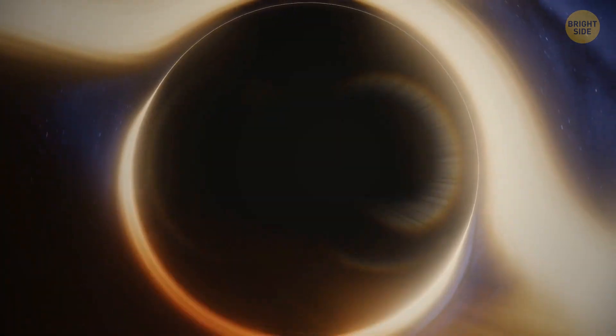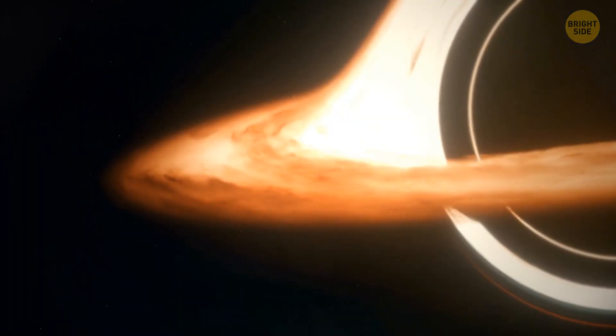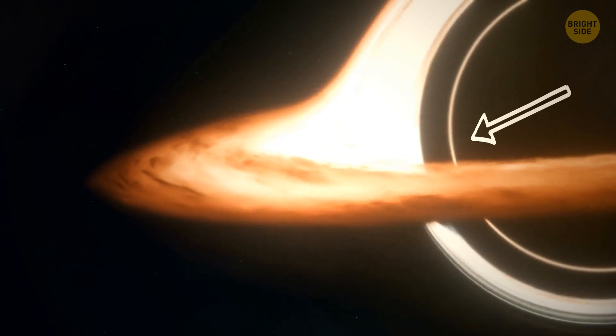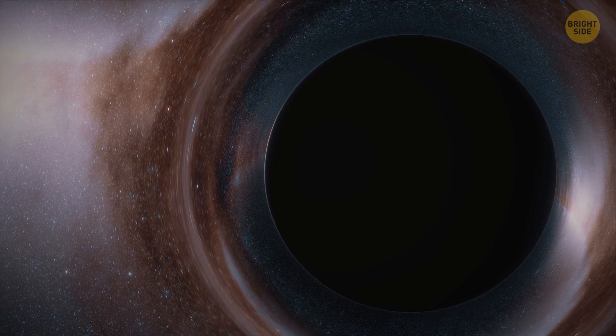The Event Horizon is a point of no return on the outskirts of a black hole. When something, for example, matter, radiation, or light, reaches this boundary, there is no way for it to escape.